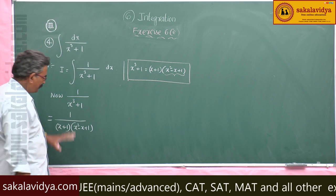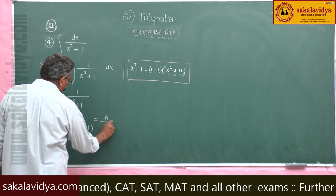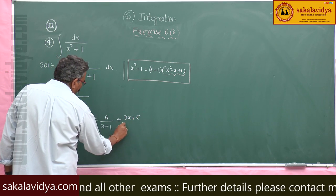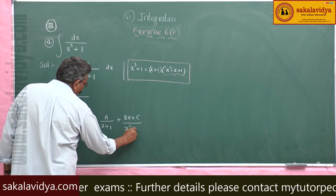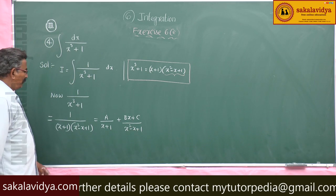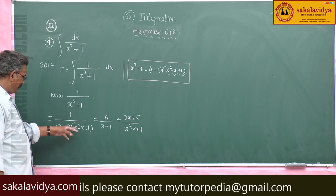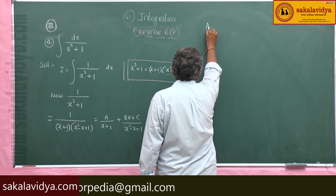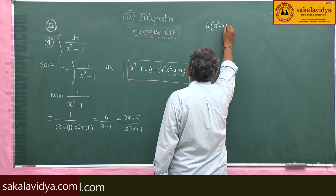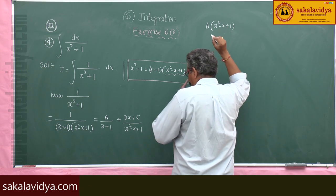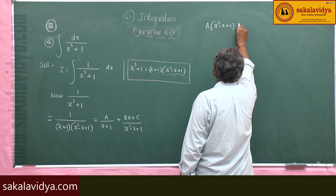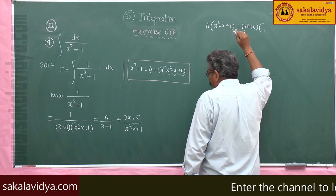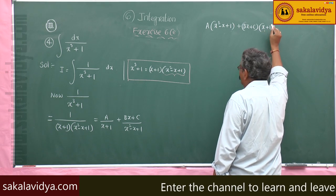Let us write the partial fractions: A by x plus 1 plus Bx plus C by x square minus x plus 1. Multiplying both sides with x plus 1 into x square minus x plus 1, we get A into x square minus x plus 1 plus Bx plus C into x plus 1 is equal to 1.